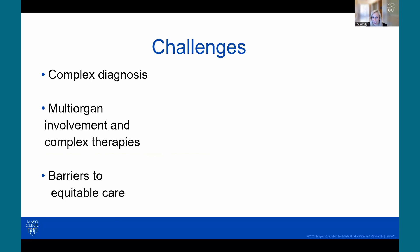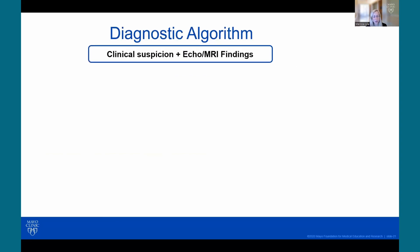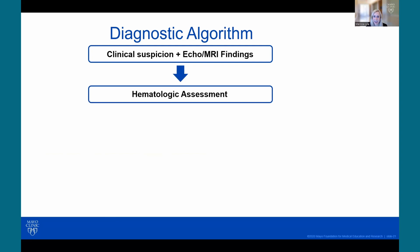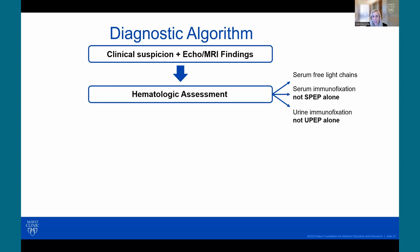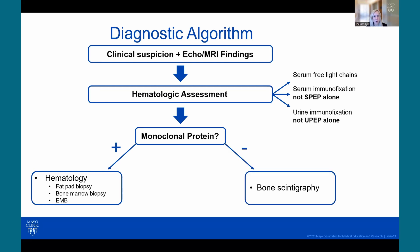How do we tackle these challenges? Complex diagnosis requires multidisciplinary algorithms that make the diagnostic process less confusing. Once you have clinical suspicion with echo and MRI findings and red flag symptoms, you proceed down the diagnostic pathway to look at the hematologic assessment, which includes serum free light chain and serum and urine immunofixation. If abnormal, a hematology consult is warranted because tissue will be needed — whether bone marrow biopsy, fat aspirate, or endomyocardial biopsy. If no monoclonal protein is present, bone scintigraphy can be utilized to diagnose TTR amyloid.